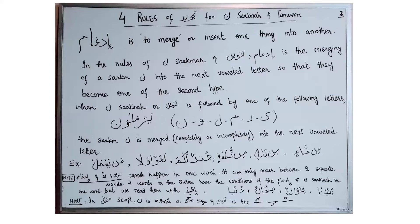In the next example, Tanween is followed by letter Lam, which is one of the Yermalun letters. We merge the Sakin Noon hidden in Tanween into letter Lam and recite: Jwa-du-la-kum. In the following example, Tanween is followed by letter Waw, also one of the Yermalun letters. We merge letter Noon with Waw, hold the Gunna, and recite: Law-wa-mu-la.